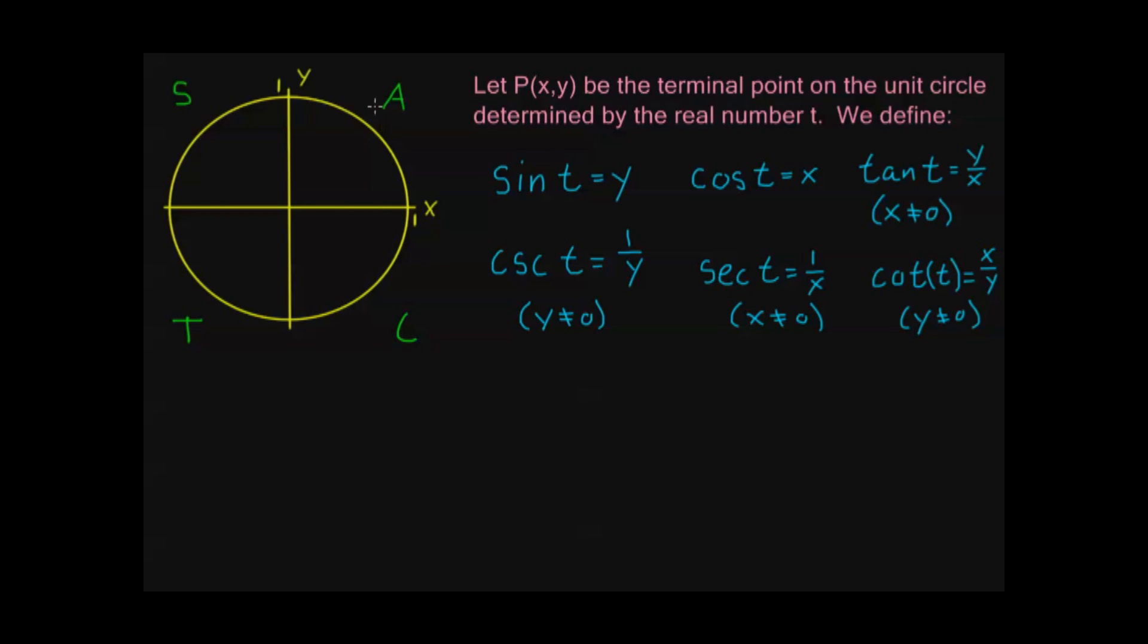Now, what this means is, up in here, quadrant one, what this A means is it does mean all. This means that all trig functions in quadrant one, or where t is in quadrant one, are going to be positive.